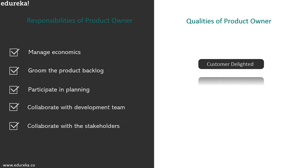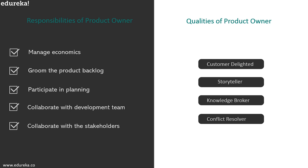The core qualities of a product owner include: being customer-delighted — listening to stakeholders and discovering latent needs; being a good storyteller — thinking about how to transform stories into effective product features; being a knowledge broker — representing the product backlog and serving as the interface between the team and stakeholders; and being a conflict resolver — having the courage and capability to engage when things get difficult and break down problems to solve them.